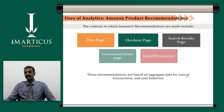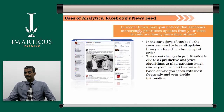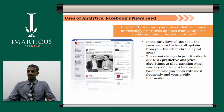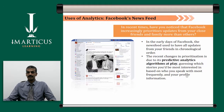Facebook also makes use of analytics a lot. Have you noticed that Facebook increasingly prioritizes updates from your close friends and family more than others? In the early days of Facebook, the newsfeed had all updates from friends in chronological order. The recent changes in prioritization are due to predictive analytics algorithms, guessing which stories you are most interested in based on who you speak with most frequently and your profile information. They can gather your information, filter and find people with the same patterns or characteristics, and help you make friends on Facebook.